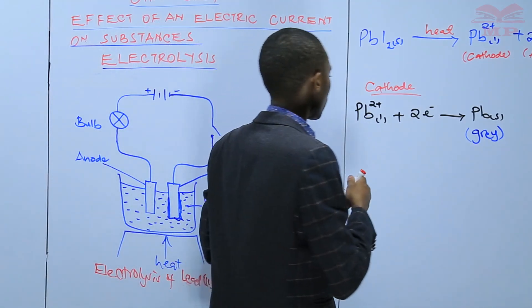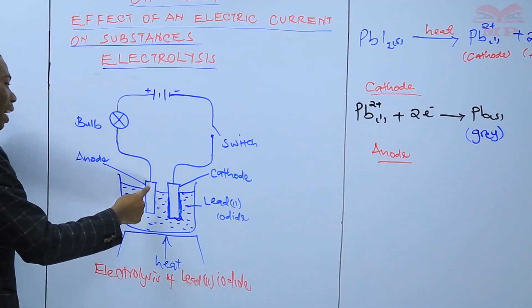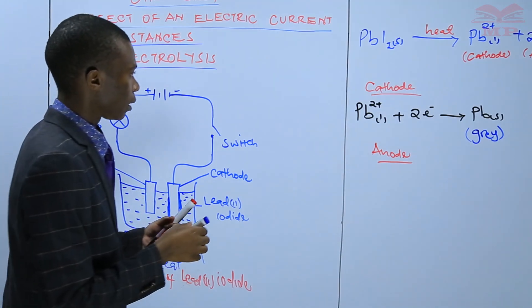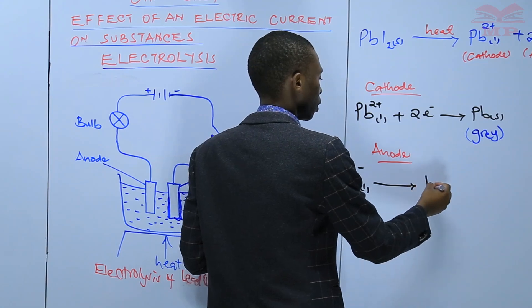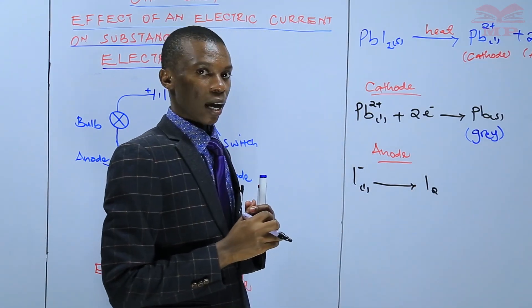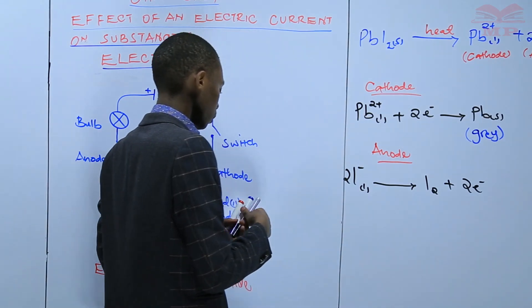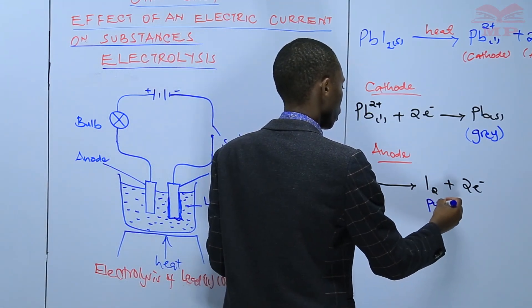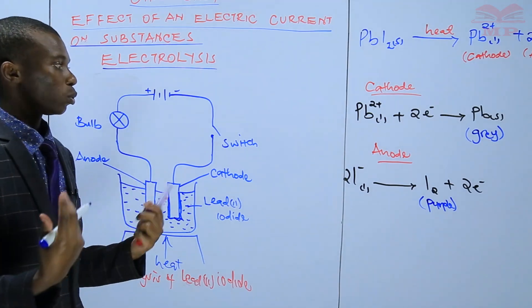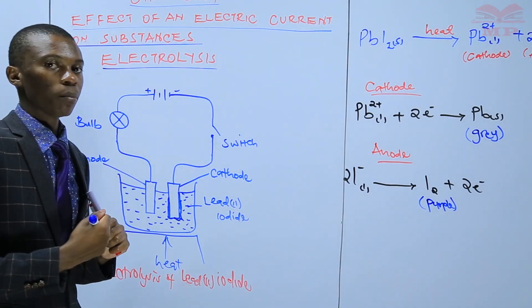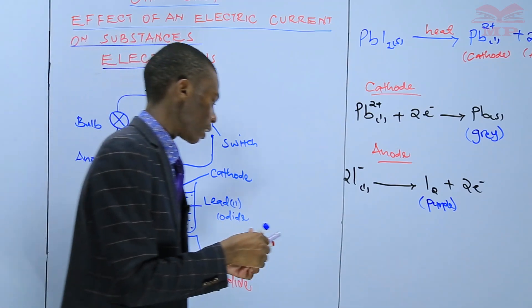At the anode, you are depositing iodide ions. The iodide ions are going to lose electrons. When they lose electrons, you are going to have iodine vapor, which is purple in color. Two electrons will be lost. So you are going to observe purple vapor at the anode. Upon cooling, you are going to observe shiny black crystals. That is what happens at the anode and the cathode.